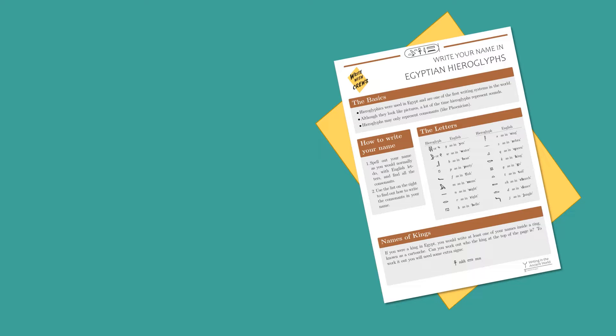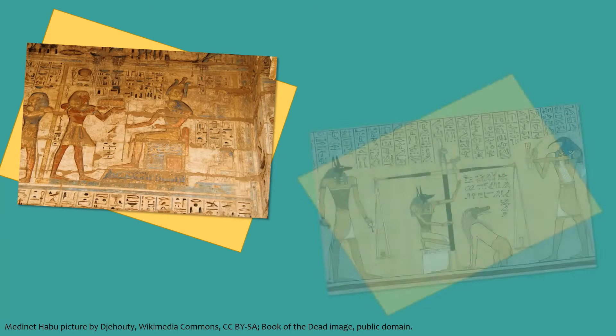Egyptian hieroglyphs were used to write the Egyptian language over several millennia, from about 5,000 years ago until the 4th century AD, a period of over 3,000 years. That's longer than the period between now and when Phoenician was written down. In all this time the hieroglyphic writing system changed remarkably little, although other writing systems were also developed to write the Egyptian language in that time. Egyptians often incised hieroglyphs in stone, but they would also write them in ink on papyrus.